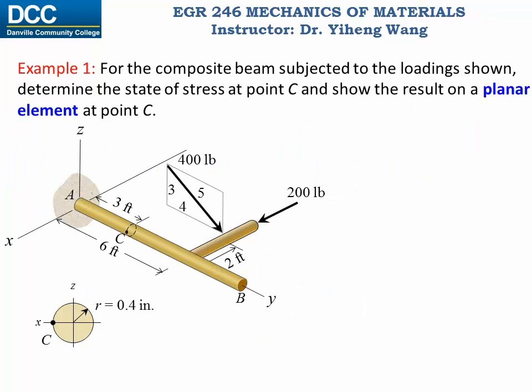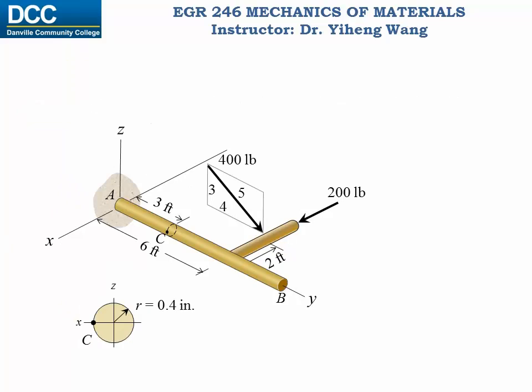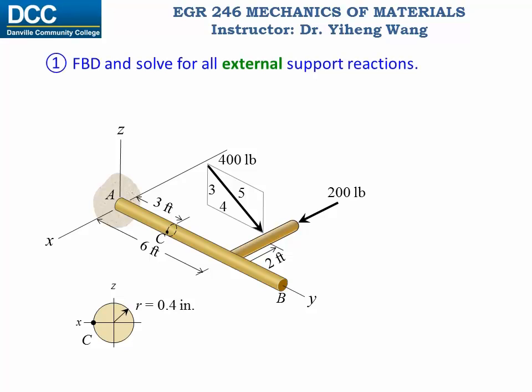Let's look at this example. For this composite beam, which is fixed supported at point A and subjected to the given loadings, we need to determine the state of stress at point C and show the result on a planar element at point C. The first step is to draw the free body diagram of this member and solve for all unknown external support reactions.